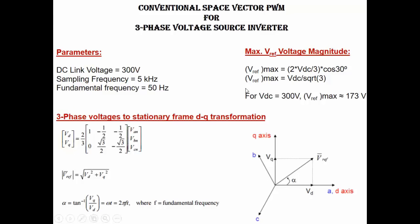Here I have also written an expression which gives the maximum magnitude of the reference voltage vector. The maximum magnitude is nothing but the radius of the circle which can be inscribed within the hexagon made by the 6 voltage space vectors. In this model we have used a DC link of 300V, so the maximum magnitude of the reference vector comes out to be 173V, which also indicates the peak amplitude of the inverter phase output voltage. In this model we are going to use a reference vector magnitude of 173V.